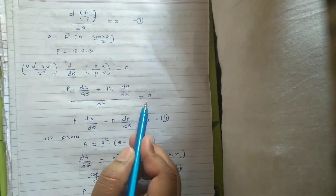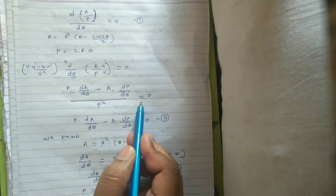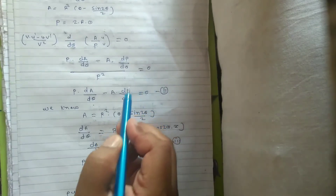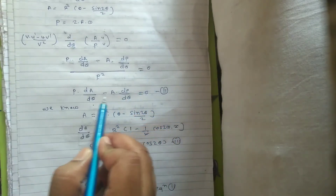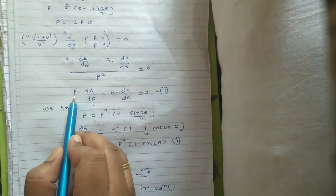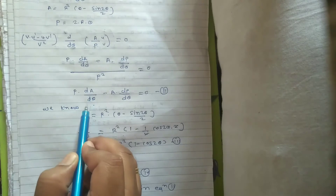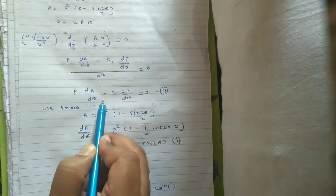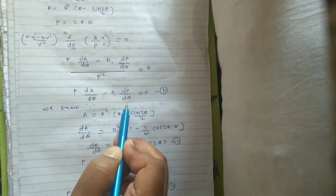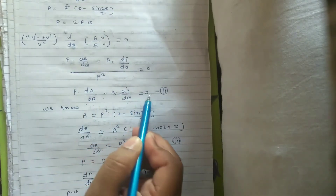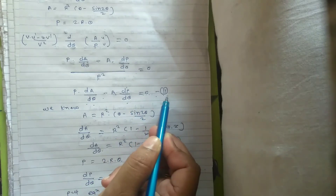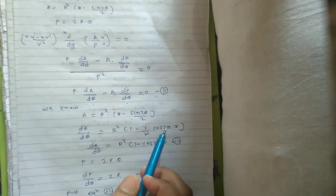Equating to zero and multiplying across by P², the remaining equation is: P·(dA/dθ) − A·(dP/dθ) = 0. This is equation number 2.